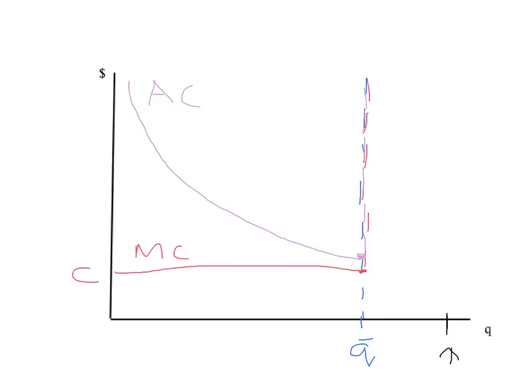We've now seen a number of different examples of different technologies. For the rest of this course we're going to be mostly using our simple technology — the nice U-shaped average cost curve with increasing marginal cost. But remember, the rules of technology, in particular the relationship between average cost and marginal cost, are much more general than that. Talk to you next time.